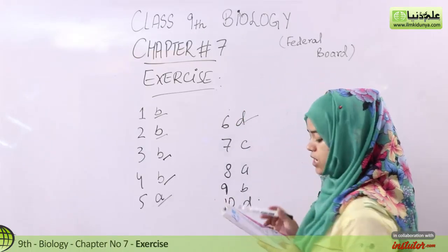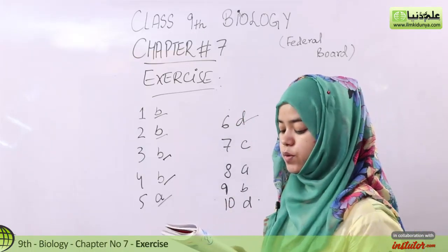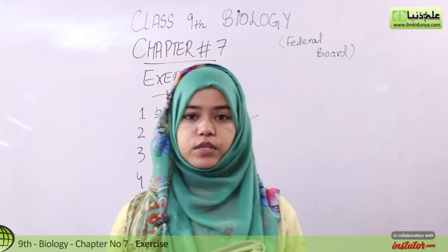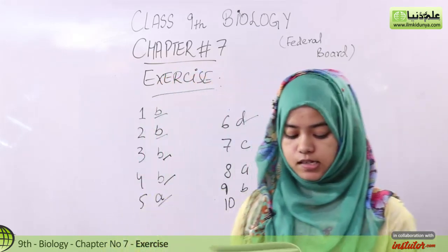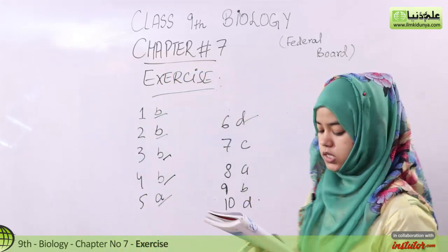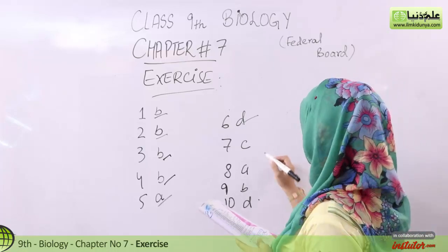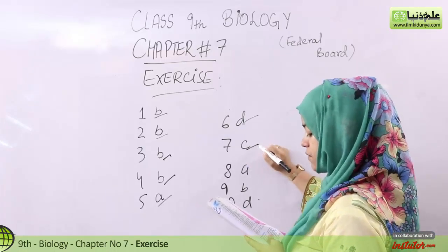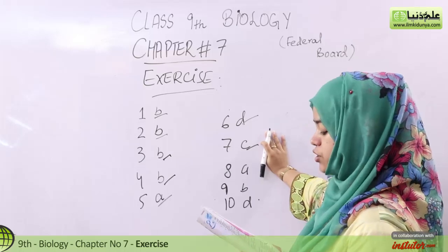Sixth MCQ: which of these can enter the Krebs cycle? The answer is Acetyl CoA, option D. Seventh MCQ: when we work hard we suffer from muscle fatigue because muscle cells carry out anaerobic respiration and accumulate lactic acid. The answer is option D.